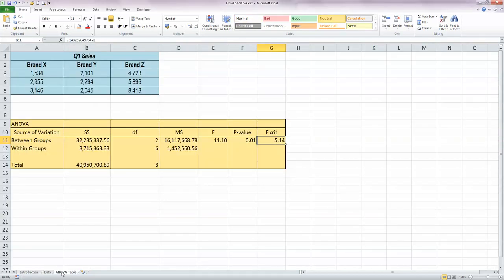So before we learn how to do the calculation, let's remind ourselves of what we use an ANOVA test for. An ANOVA test is quite simply a tool that we use to compare three or more means. In my example here in blue at the top, I've got some Q1 sales figures for brand X, brand Y, and brand Z. What I'd like to be able to do with my one-way ANOVA test is to determine if there is a significant difference between these three means, or if they are all the same.